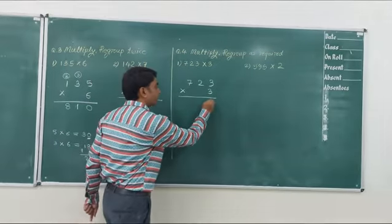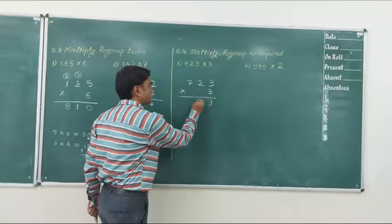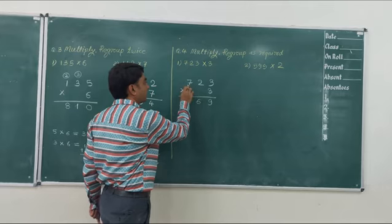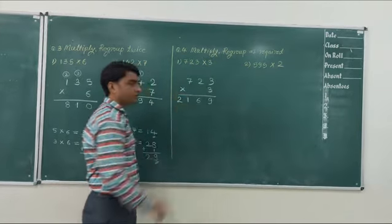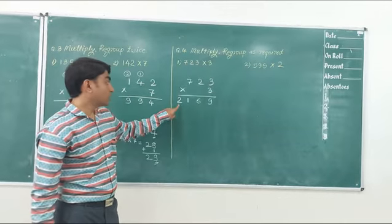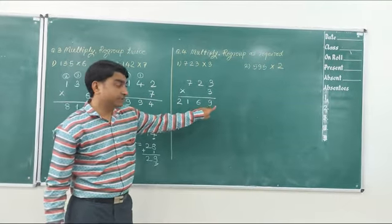3 threes are 9, 3 twos are 6, 3 sevens are 21. So here, the answer is 2169.